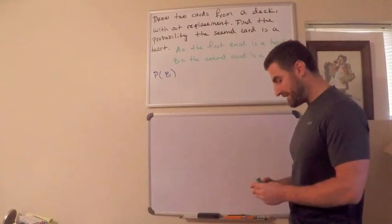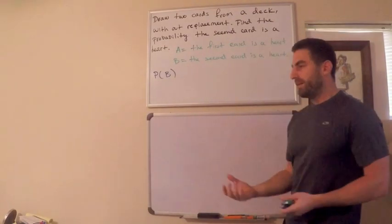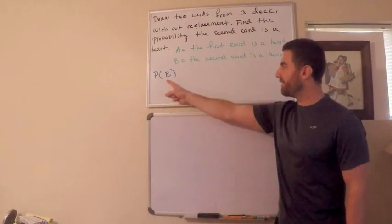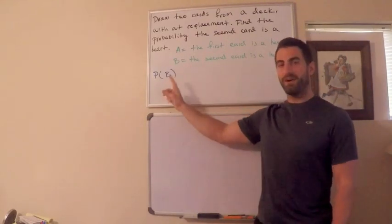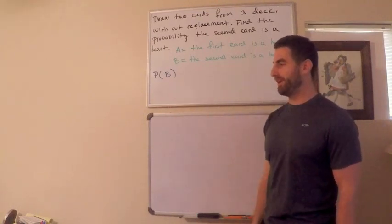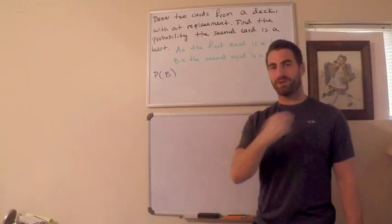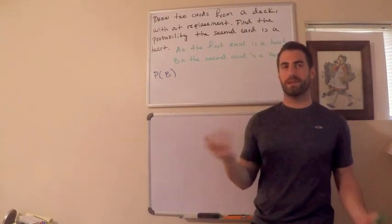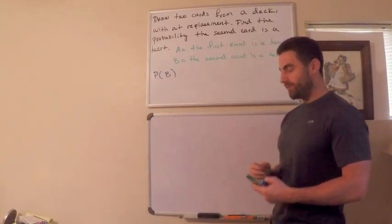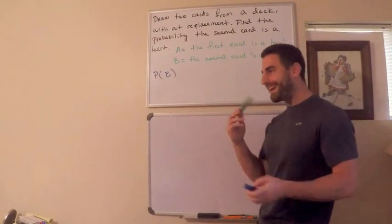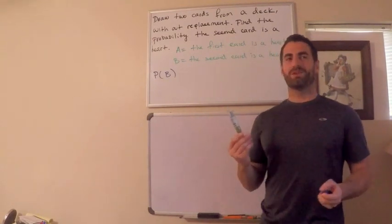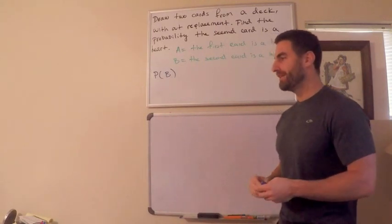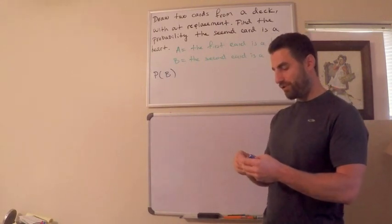How am I going to figure this out? I'm drawing two cards without replacement, so the second card — event B — being a heart depends on whether the first card is a heart or not. If my first card is a heart, that influences whether the second card is a heart; if it's not a heart, that influences it as well. This requires the law of total probability.